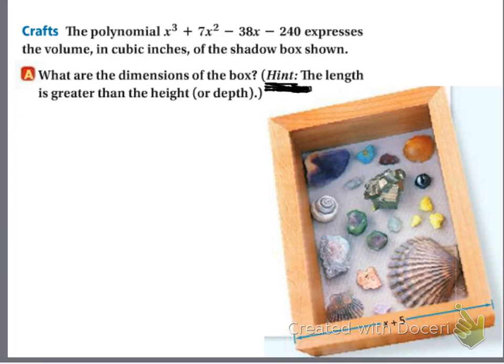Word problem. So they give you a polynomial, and that expresses the volume in cubic inches of the shadow box shown. Now volume is length times width times height. It says, what are the dimensions of the box? Hint, the length is greater than the height or the depth. Here's what we're using. All the way at the bottom there, it says x plus 5, so that means negative 5 goes in the box.